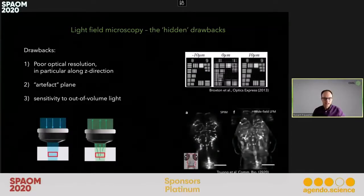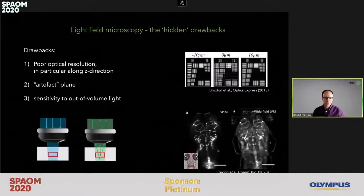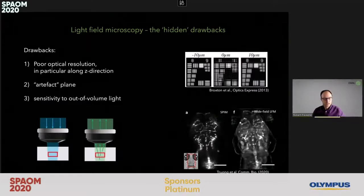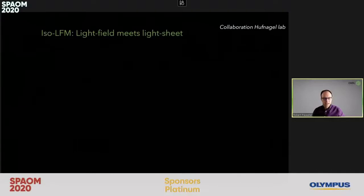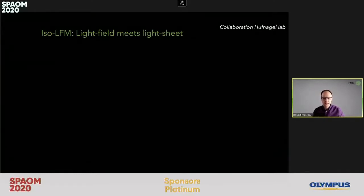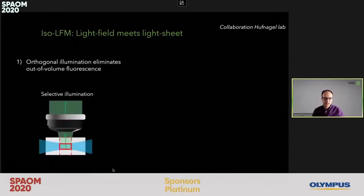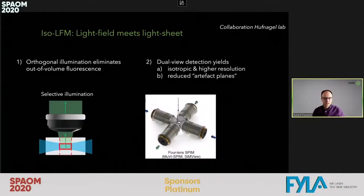This was highlighted by a paper from the Fraser Group that showed a marked improvement by applying selective plane illumination with light field microscopy. We joined the EMBL with Lars Hufnagel's renowned light sheet microscopy lab and set out to address these shortcomings by combining light field and light sheet microscopy. We introduced a selective plane illumination scheme to eliminate out-of-volume fluorescence, and also adapted a dual-view detection geometry to achieve isotropic and higher resolution imaging while reducing artifacts.